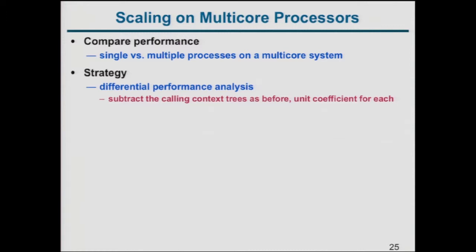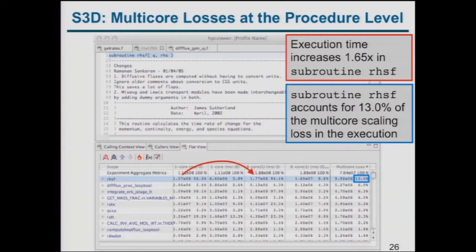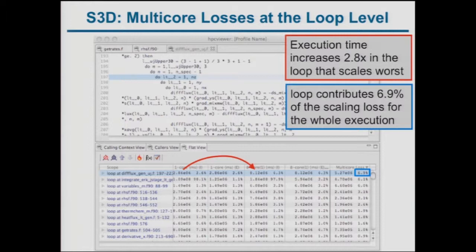You can run on four cores and scale up to 16 cores, or use simultaneous multi-threading with two or four threads per core and look at within-node scaling. You do the same thing — subtract the calling context trees — and it points out routines or individual loop nests in the code with the worst scaling.